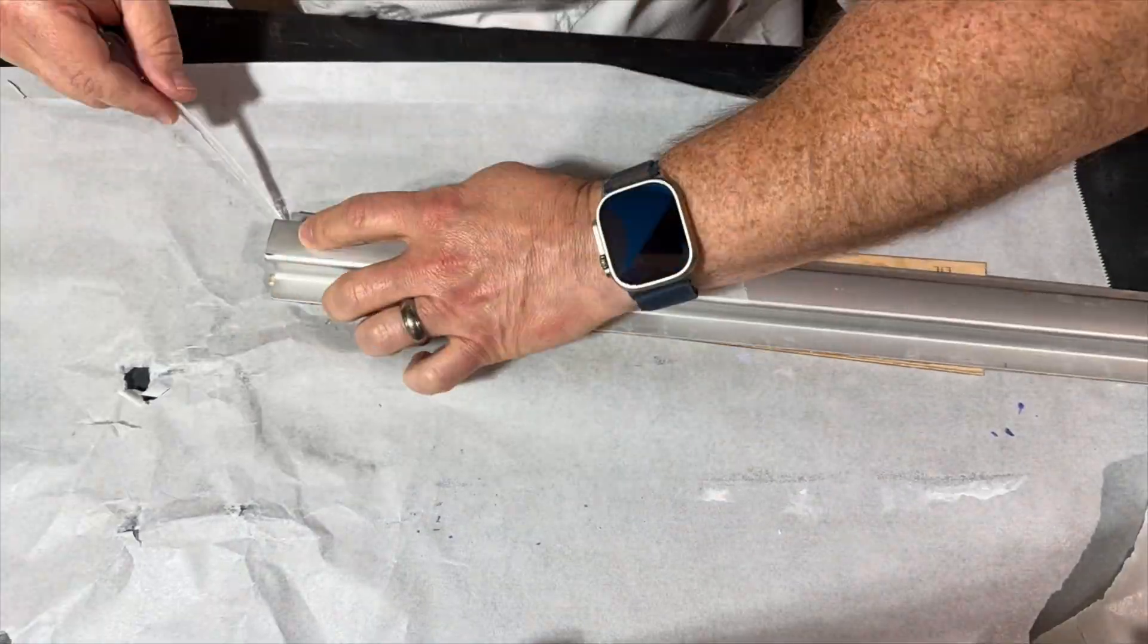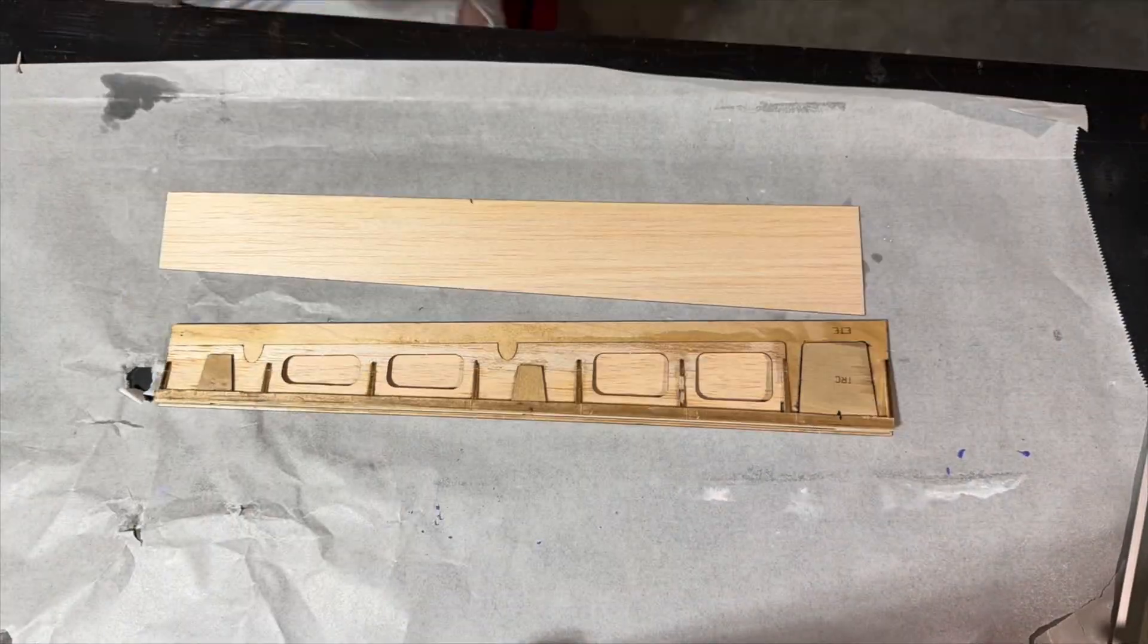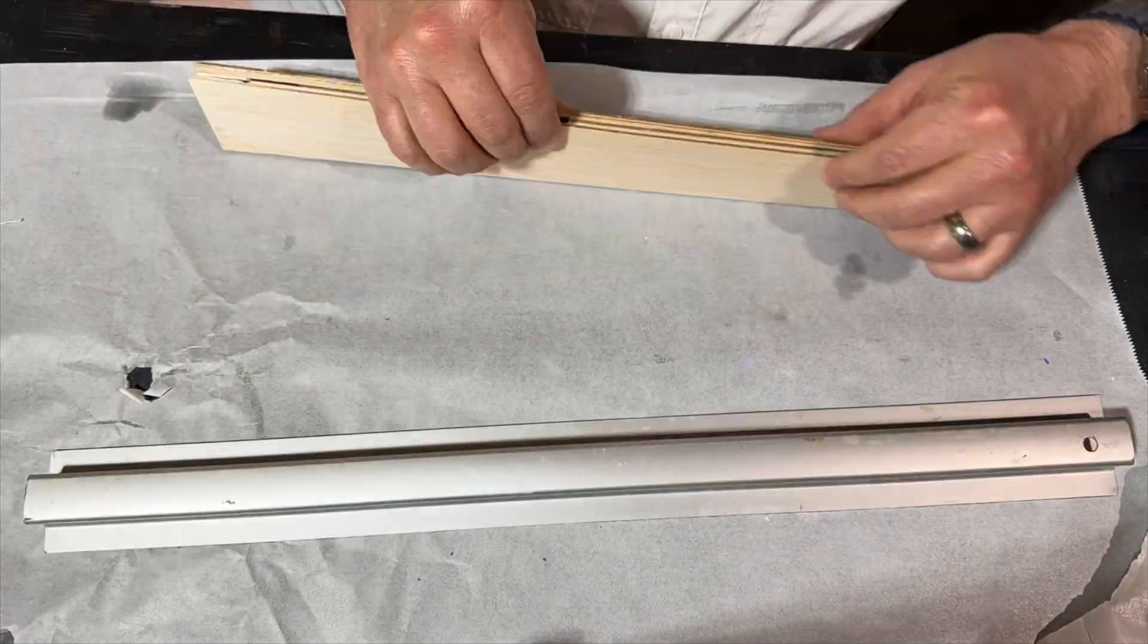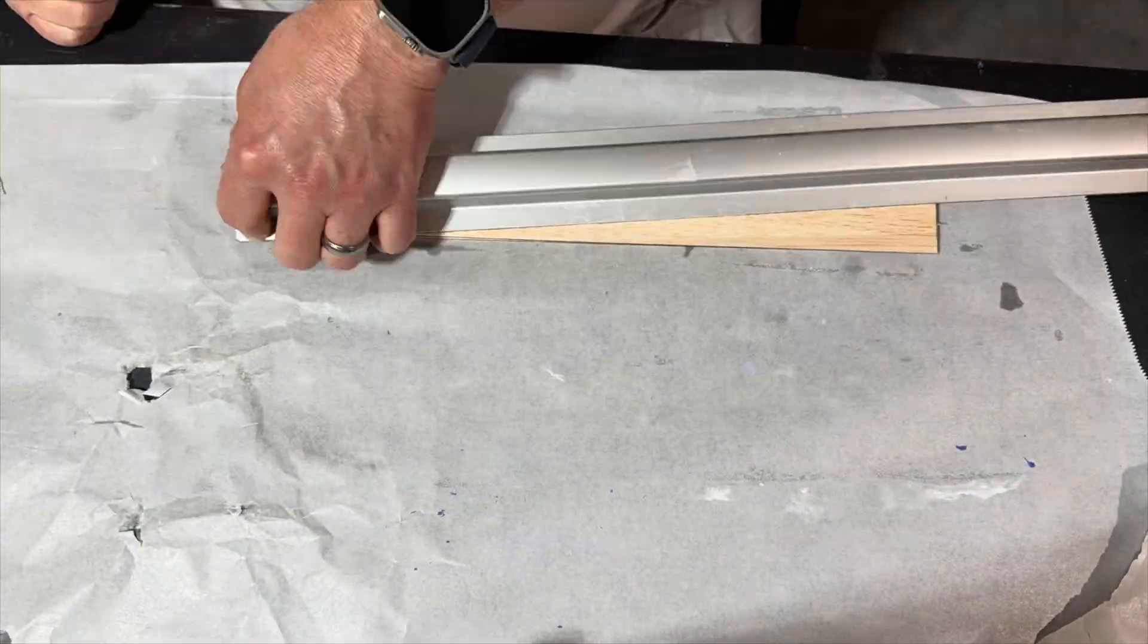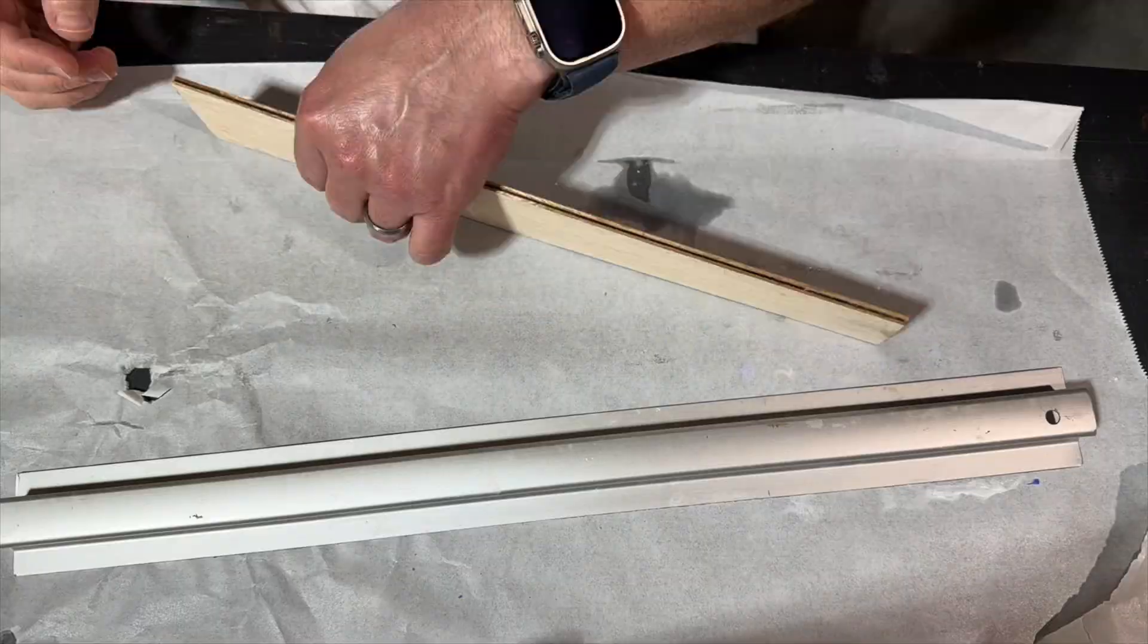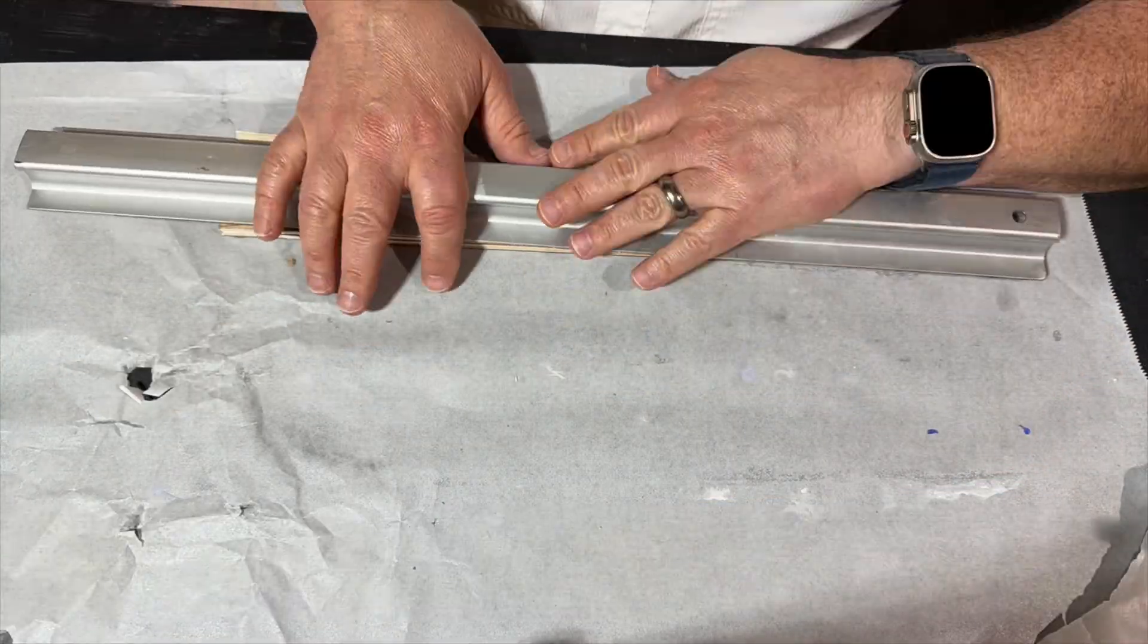So what you're seeing here is we're adding thick CA to the ribs and medium CA to the leading edge. And then once the sheeting is in place, we're adding thin CA to the trailing edge to join it to the sheeting.